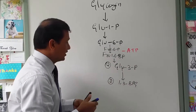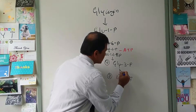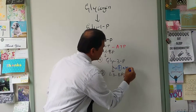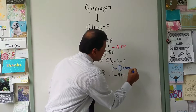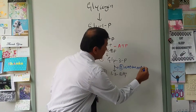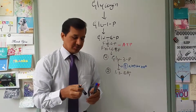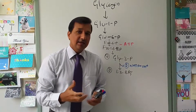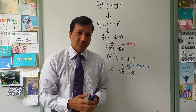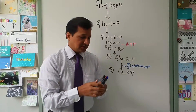During this reaction, two molecules of NADH + H⁺ are produced. These two NADH + H⁺ can get into the mitochondria and undergo the electron transport chain to produce ATPs.